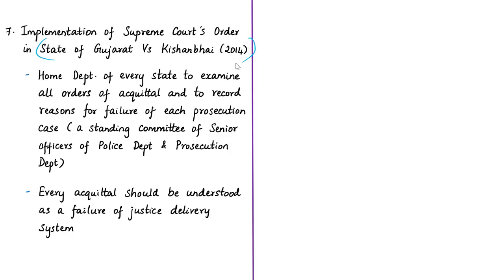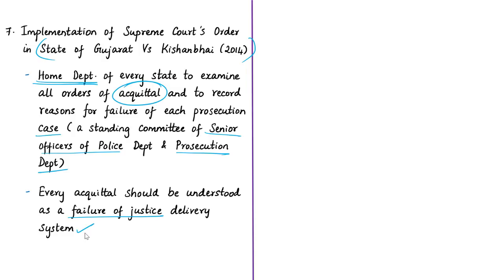To address the low conviction rate in sexual assault cases, proper implementation of the Supreme Court verdict in Kishanbhai versus State of Gujarat is necessary. In this verdict, the court directed the home department of every state to examine all orders of acquittal and record reasons for the failure of each prosecution case. This responsibility is vested with a standing committee of senior police and prosecution officers. The Supreme Court stated every acquittal should be understood as a failure of the justice delivery system — acting as a self-correction mechanism within the CJS.